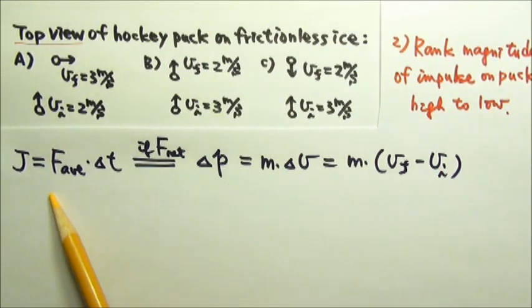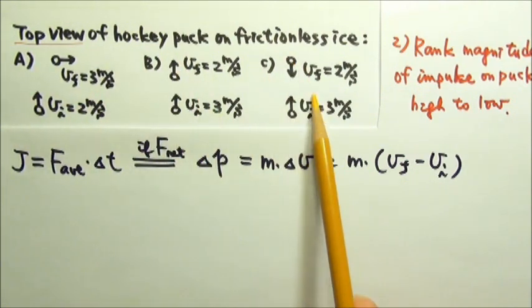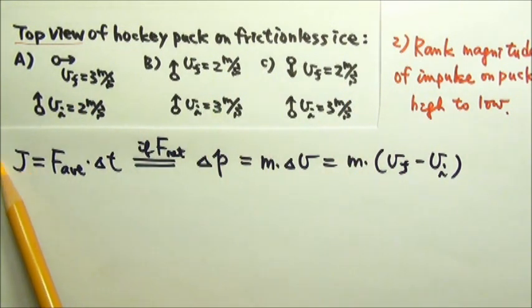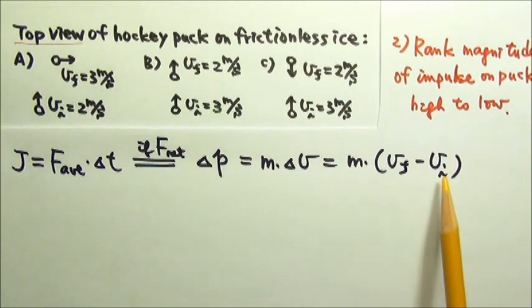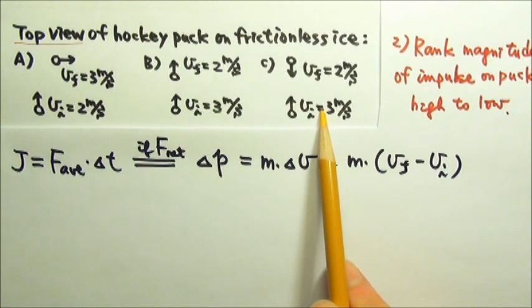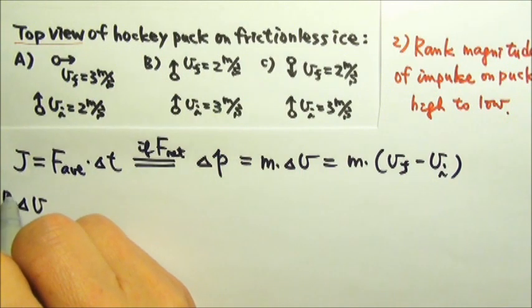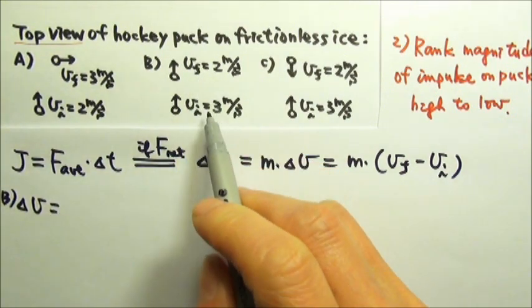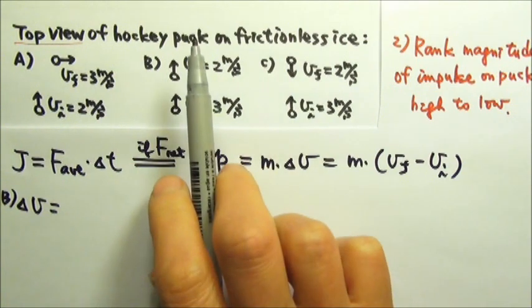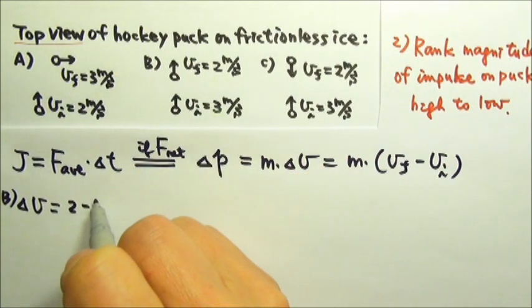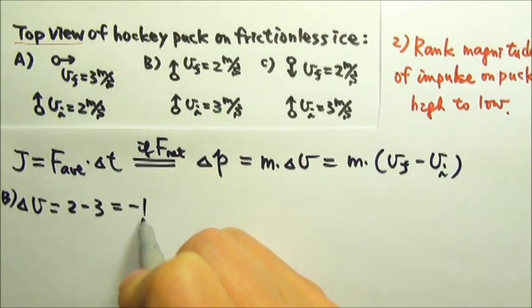Impulse, momentum, and velocity are all vectors, so this time we do have to consider the direction. Because we're looking at the same puck, the mass is the same. So to compare the impulse, we just have to compare the velocity change. Let's look at these two one-dimensional cases first. The delta v for b is the final minus the initial. If I say that way is positive, then there's positive 2 minus the initial positive 3, so the delta v is negative 1.